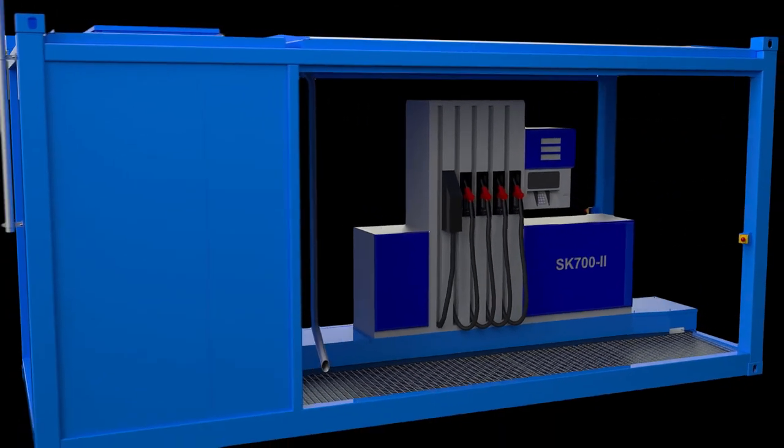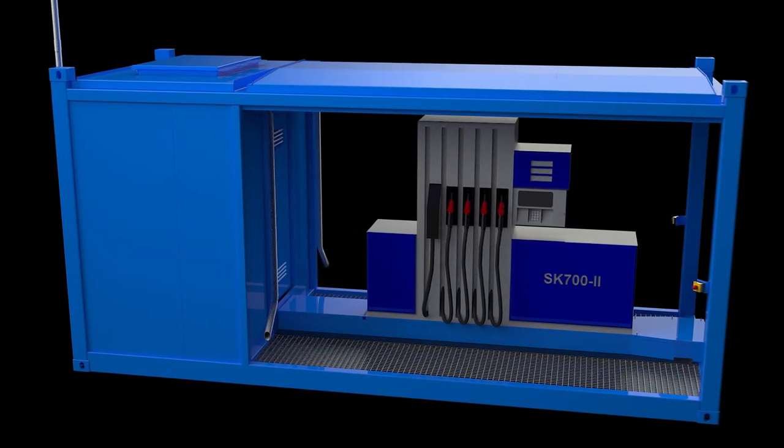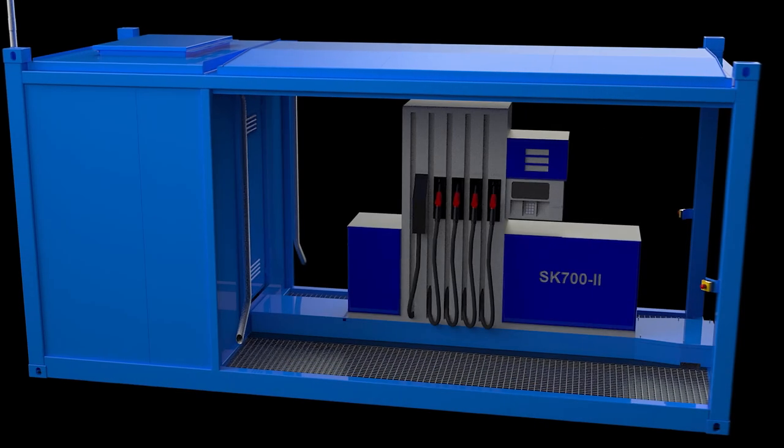The fuel pump platforms are designed as 20-foot HC container frames. They have a stable container roof with a rain gutter and waterfall pipes.